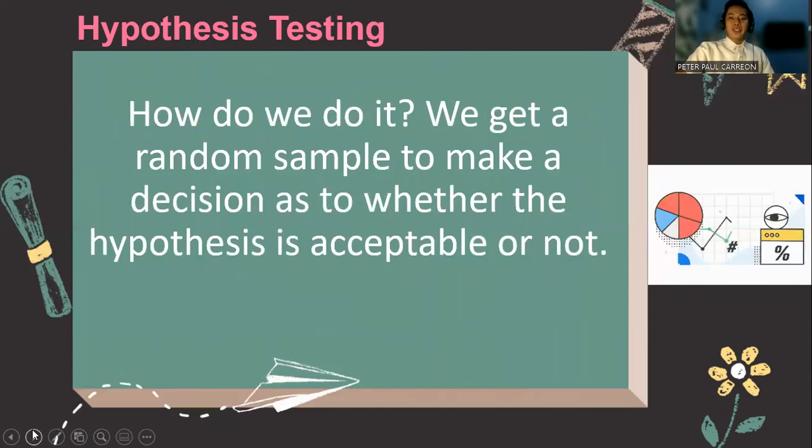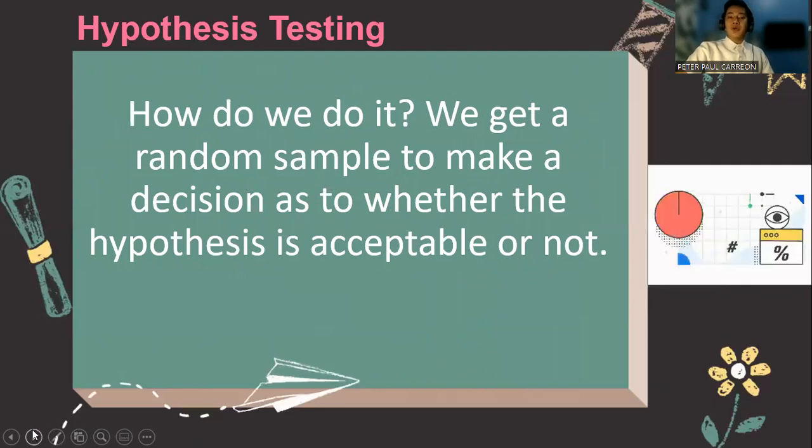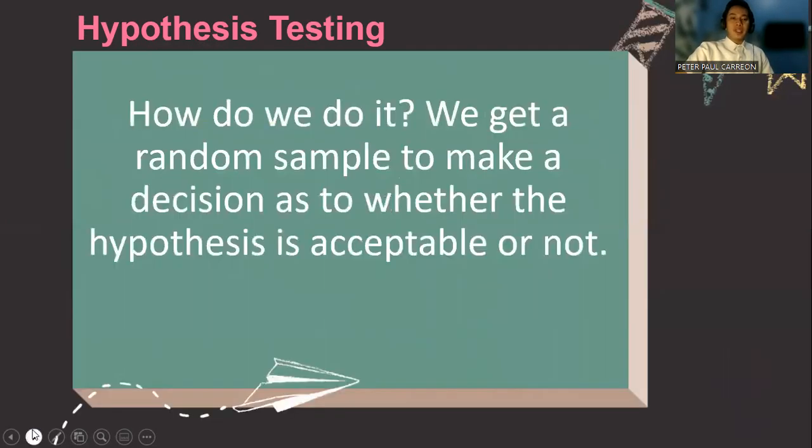So how do we do it? First, we get a random sample to make a decision as to whether the hypothesis is acceptable or not. That's the type of decision-making that we do.